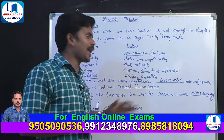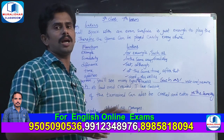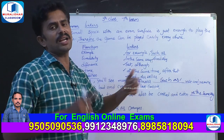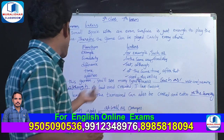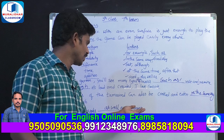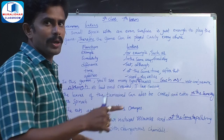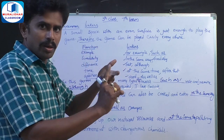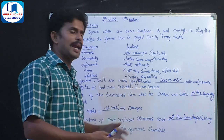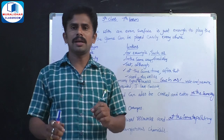The leaves of the tamarind can also be cooked and eaten. If you have spinach or tamarind leaves, you can also have tamarind leaves in the same way. Eat apples as well as oranges. We are using up our natural resources and at the same time, we are polluting our environment with dangerous chemicals.